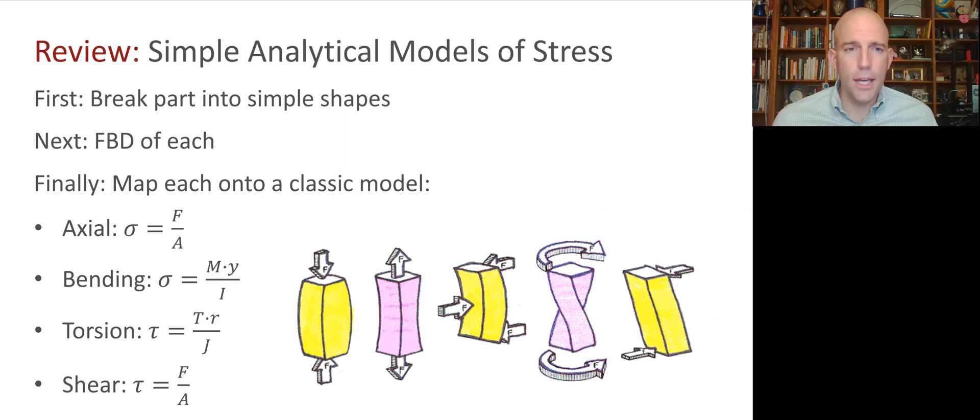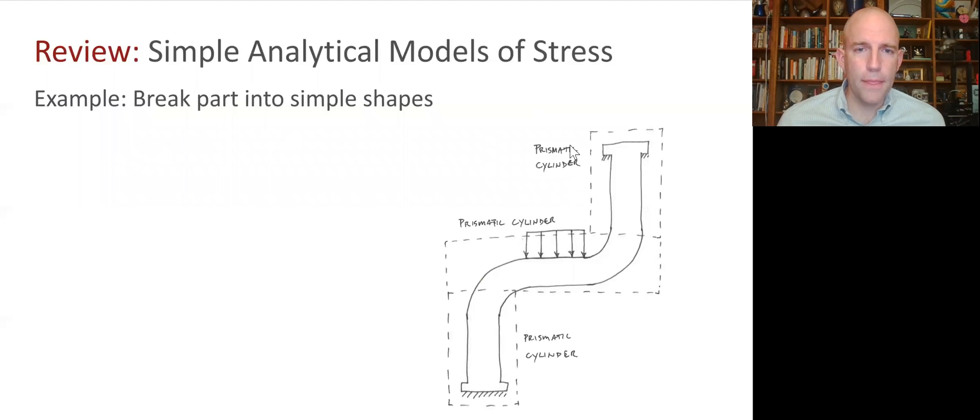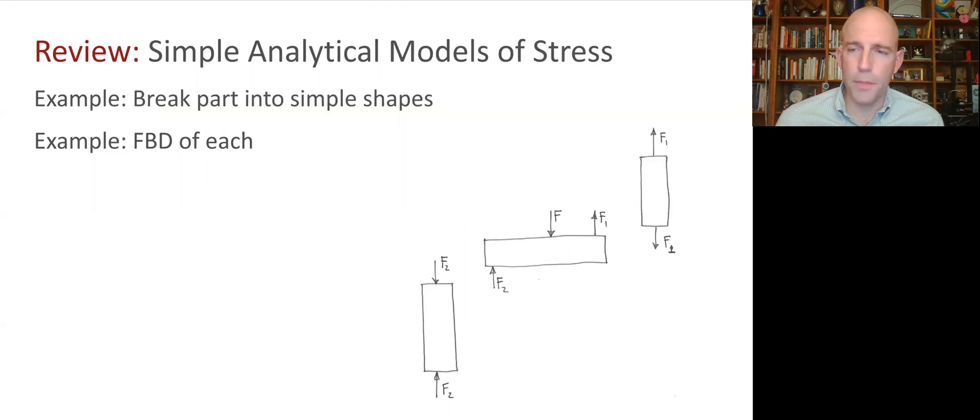All right, so what do I mean by all these things? Well, here's a quick example. We have a good example in the topic reading, but here's another one. So let's say we had this tube, maybe a pipe, that runs from a ceiling down to a floor, and there's this middle section that's loaded, and that's the main load on the pipe. Well, first, we'll break it into shapes. I don't have a model for sort of curvy-shaped pipes, but these sections seem relatively straight, so maybe I can break it into these three sections and treat them as uniform and prismatic.